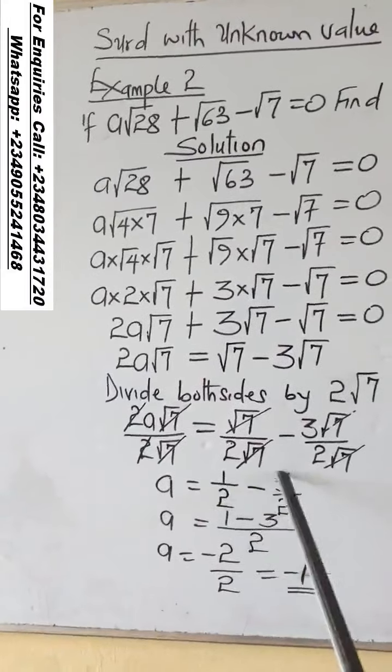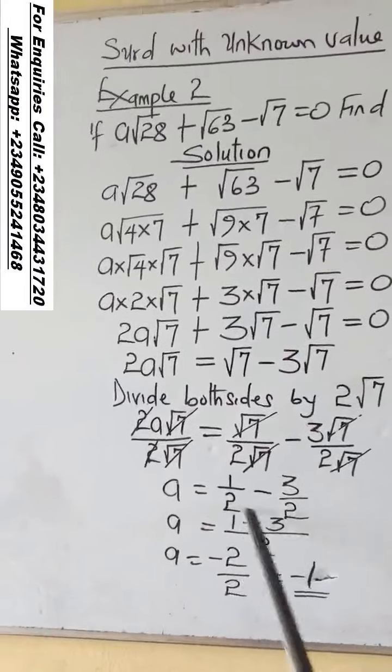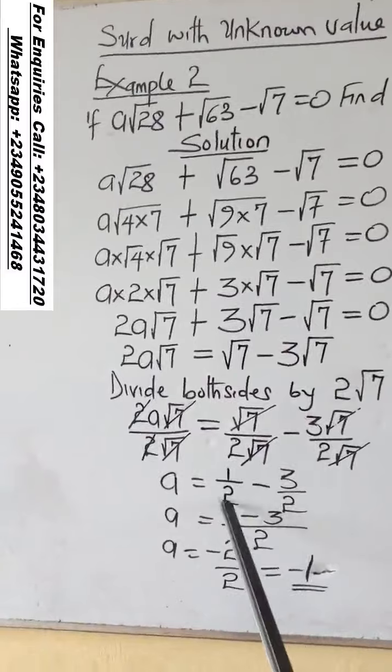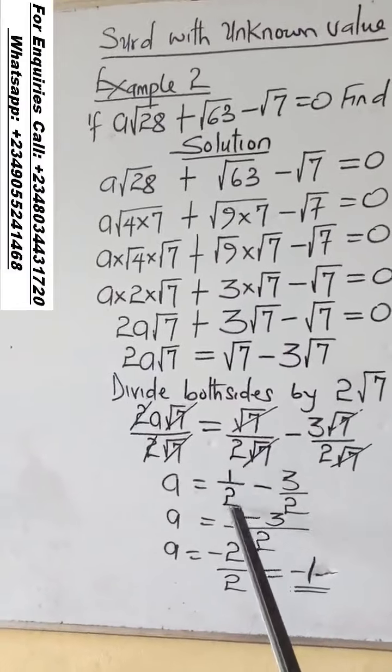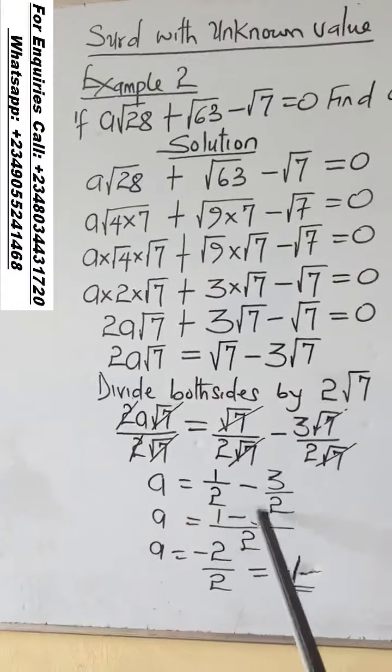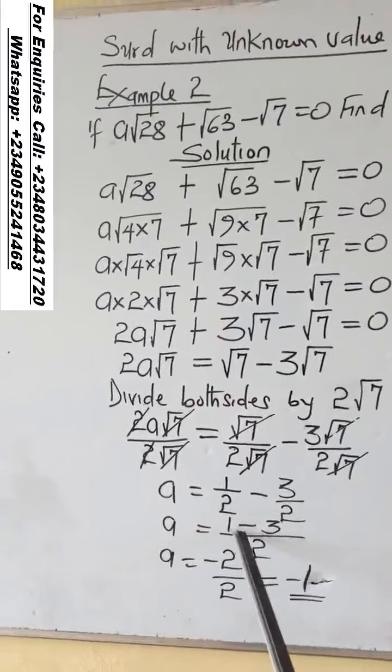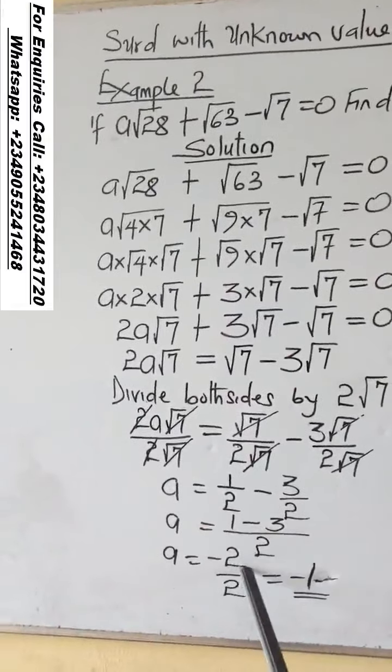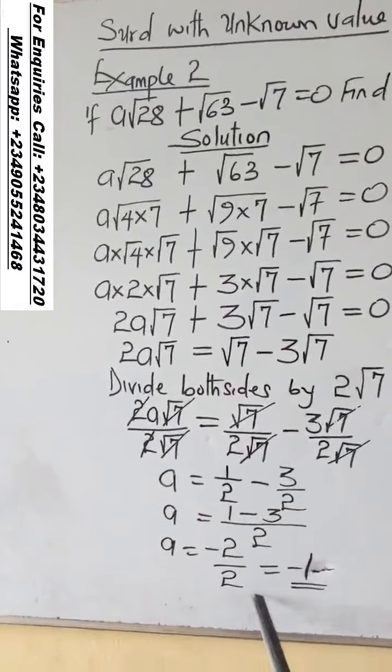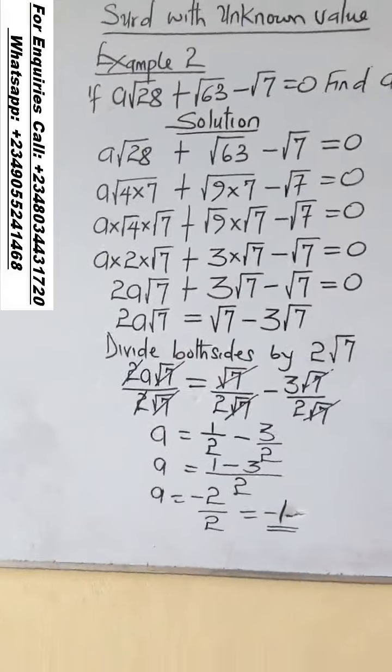So 1 over 2 minus 3 over 2. If you find the LCM, the LCM is 2. 2 into 2, 1 times 1 is 1. 2 into 2, 1 times 3 is 3. 1 minus 3 is minus 2. Minus 2 divided by 2 gives you minus 1.